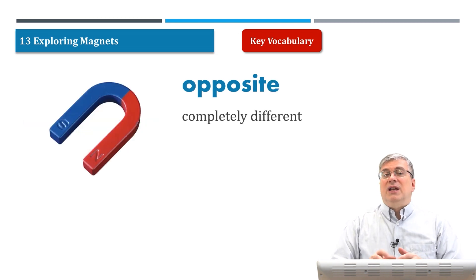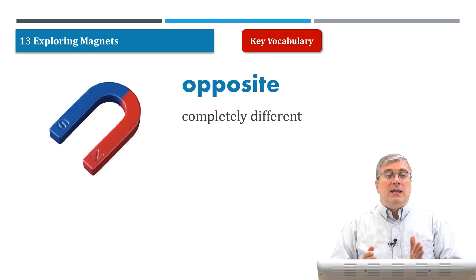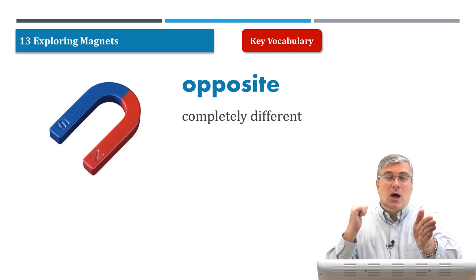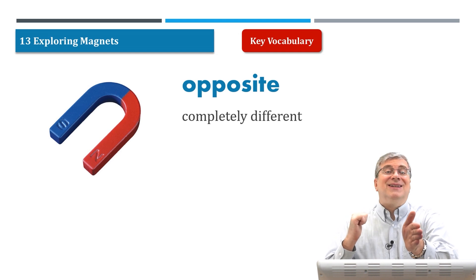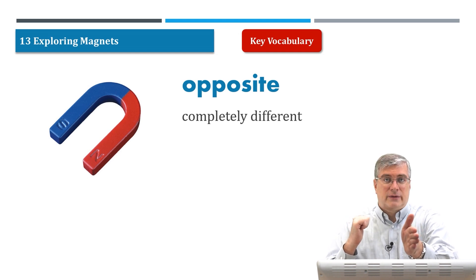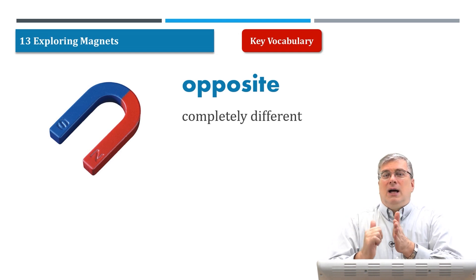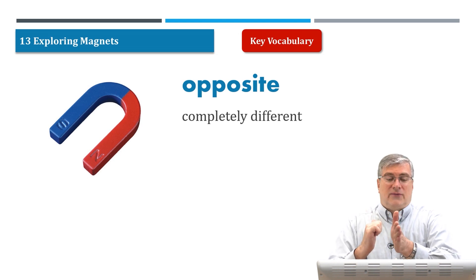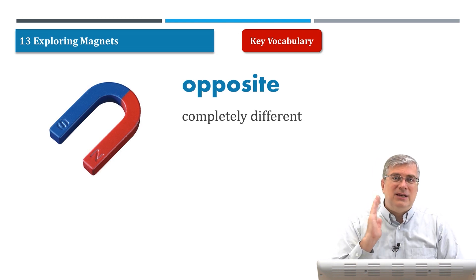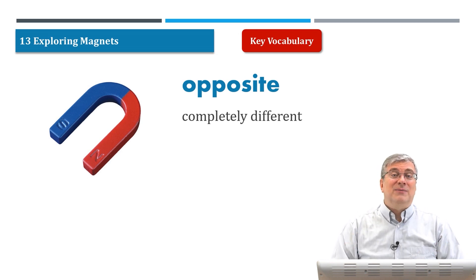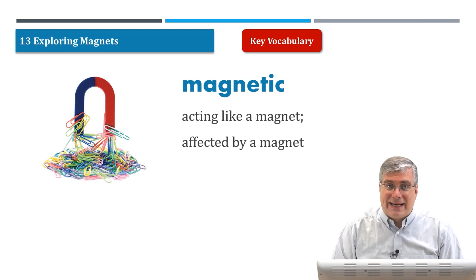Opposite means to be completely different. If I'm going north and you're going south, we are going in opposite directions. Opposite means to be completely different from each other — completely different direction, completely different personality. There are a lot of different types of opposites.